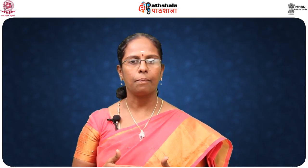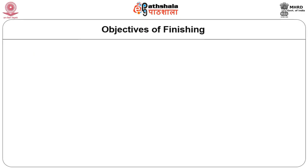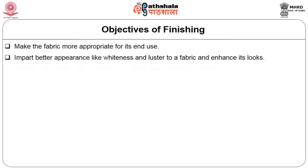When a finish is applied to cotton, it may become shiny, stronger or resist shrinking on washing. Similarly, other finishes may make the fabric softer, stiffer, water or stain resistant. In order to impart the desired functional properties, the material is subjected to different physical and chemical treatments. The objectives of finishing are to make the fabric more appropriate for its end use and impart better appearance like whiteness and lustre.